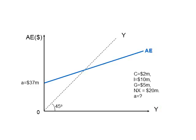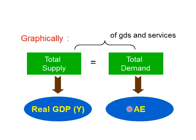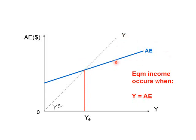When we put the AE curve in, a few things you can notice. First, your AE doesn't start from zero — there is an autonomous component. For example, say consumption is 2 million, investment is 10, G is 5 million, NX is 20: adding up all the autonomous components, your AE starts at 37 million. AE will go up as real GDP goes up, like your consumption function. Where AE cuts the Y line — that is, where it cuts all the points of equilibrium — that is the equilibrium point, and this is the equilibrium real GDP. It occurs where AE equals Y.